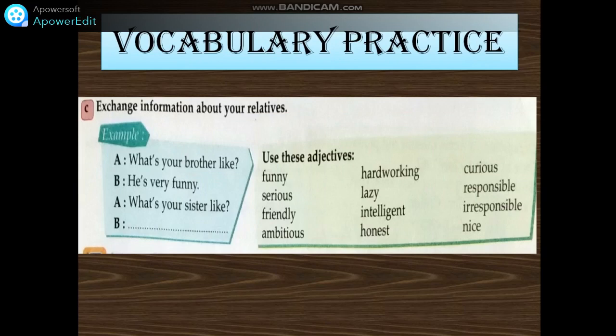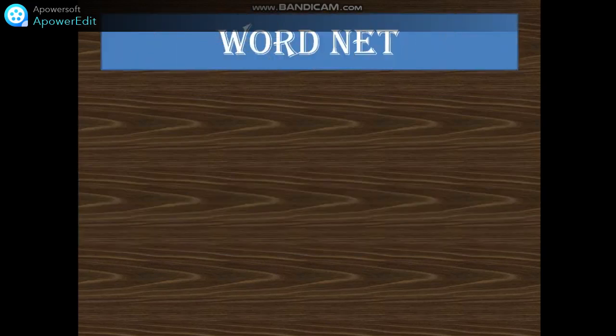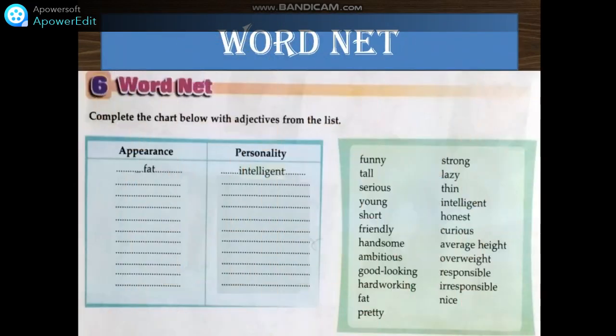Word net. Complete the chart below with adjectives from the list, please. Copy the chart in your exercise copybook. One column is about appearance, the other one is about personality. What are the adjectives in the list describing the appearance? What are the other adjectives describing the personality? Write this in your exercise copybook.